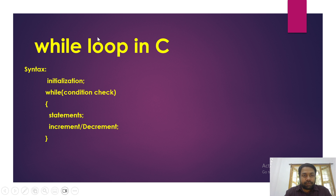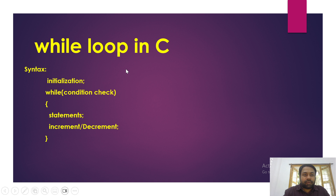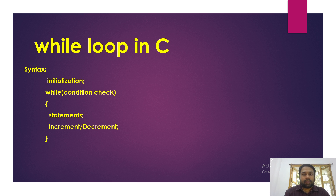Hello everyone. In this video we will be discussing about while loop in C. A while loop is a kind of looping statement — something we want to be printed repeatedly. In the previous video I discussed about for loop, and here I will be discussing about while loop. The purpose of any looping statement is to execute statements repeatedly. For example, if I want to print a hello message a hundred times, I can use a for loop or a while loop.